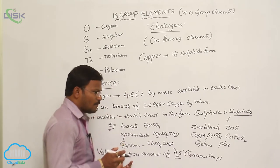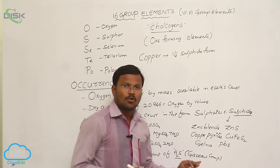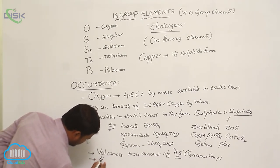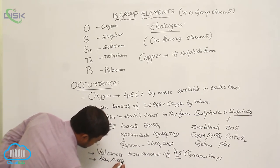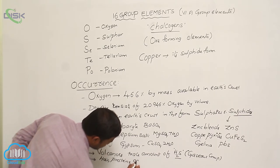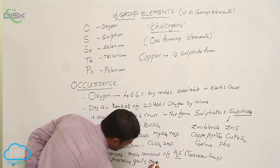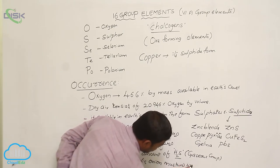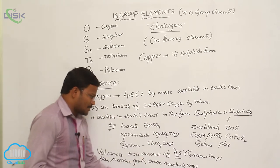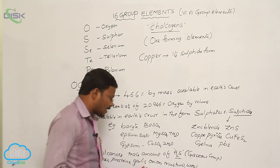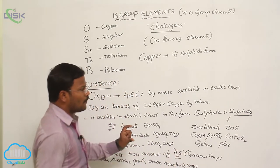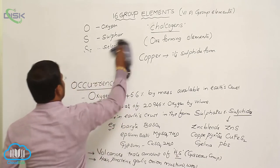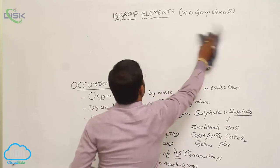Some natural substances like hair, proteins, garlic, onion, mustard, and wool also consist of sulfur atoms in their chemical composition. The remaining elements of the same group are selenium, tellurium, and polonium.